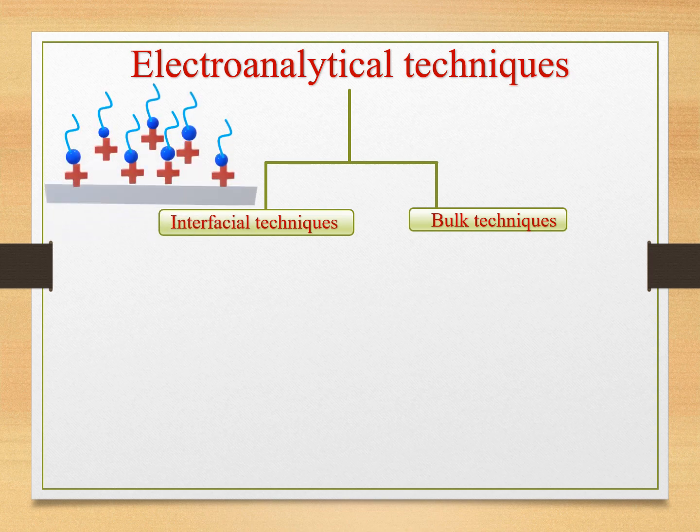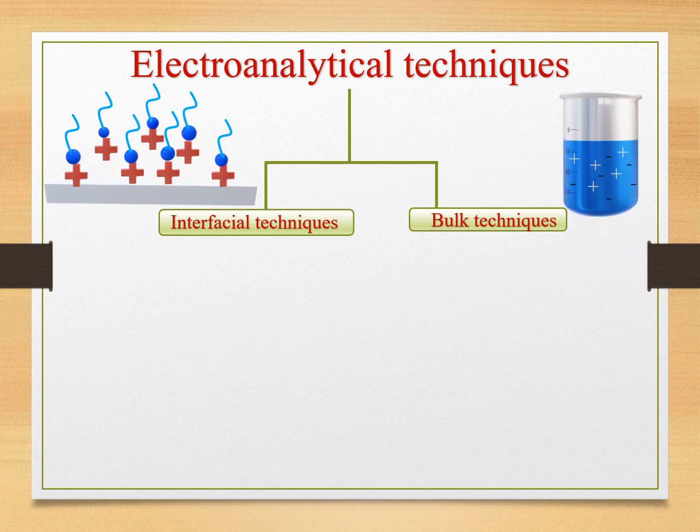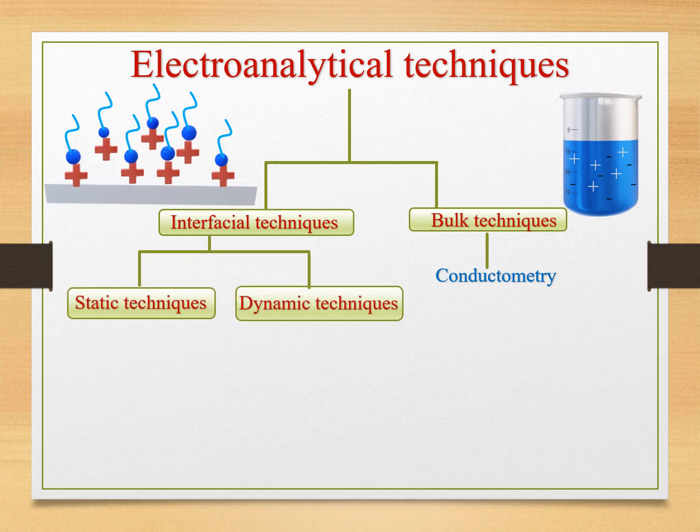Interfacial techniques measure the reaction occurring on the electrode interface, whereas bulk techniques measure the process or properties in the whole solution or bulk solution. Only one technique comes under bulk technique, that is conductometry, which measures the conductivity of the ions in the solution. Interfacial techniques can be further classified into two based on current flow: static technique and dynamic techniques.